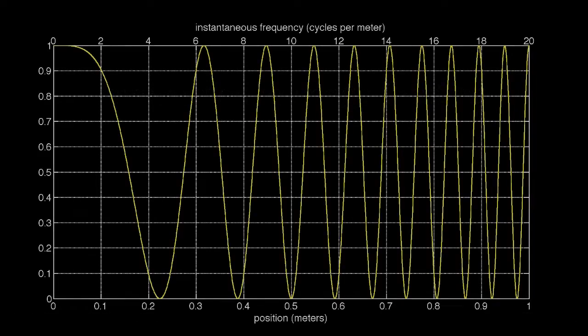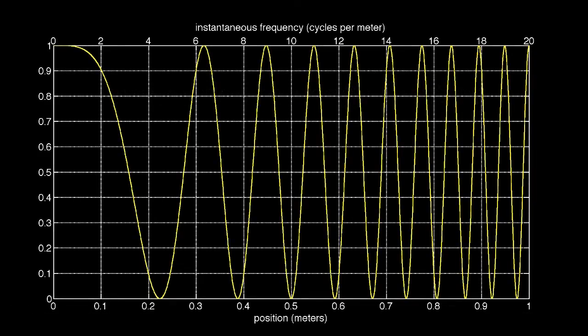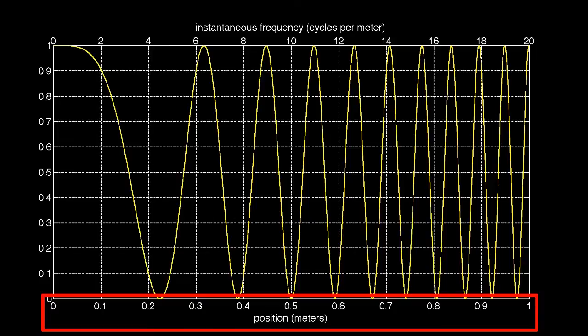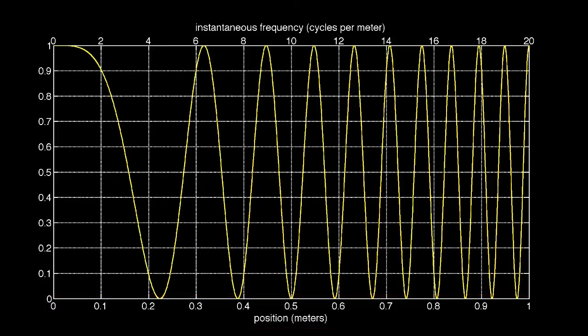To understand the concept of image contrast, it's helpful to begin by thinking about a one-dimensional signal. Here, for example, is a one-dimensional chirp waveform that extends over an interval of 1 meter. The waveform begins with an instantaneous frequency of 0 cycles per meter on the left side of the plot and increases its frequency to 20 cycles per meter on the right side of the plot. The maximum value the waveform attains is 1 and the minimum is 0.